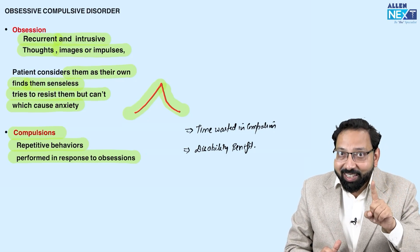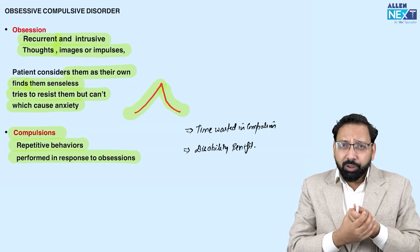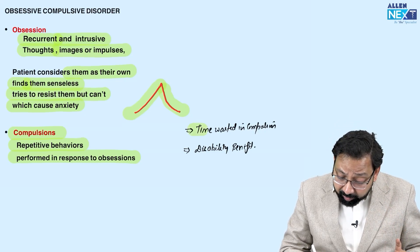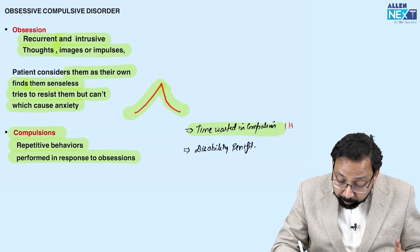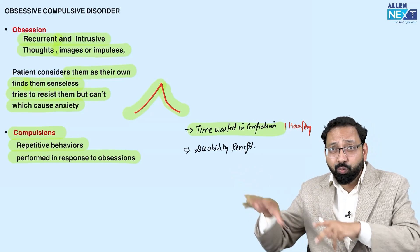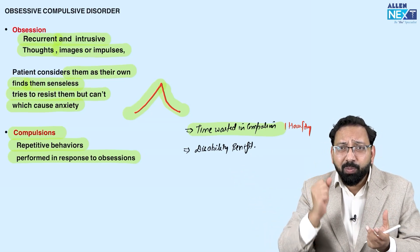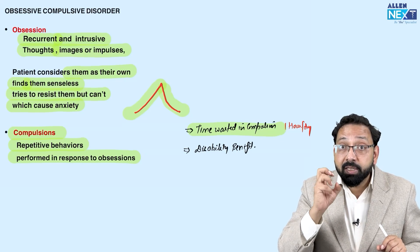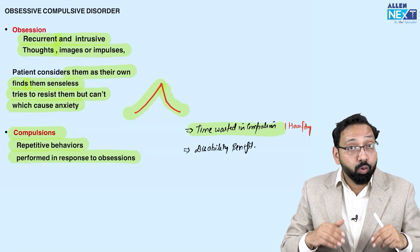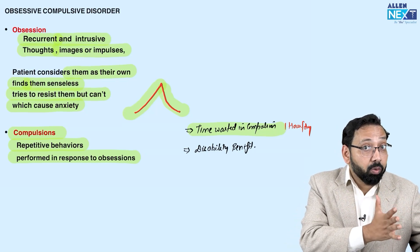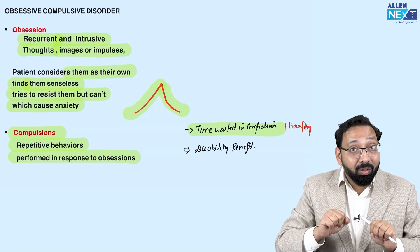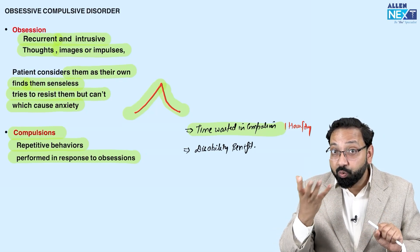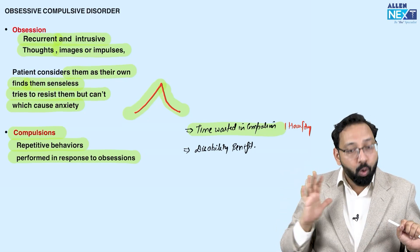A key criterion that has been asked in exams: time wasted in compulsions should be at least one hour per day. If someone is repeatedly washing hands, they cannot perform daily activities. That is why OCD patients are given disability benefit — unlike depression or anxiety, which are so-called neurotic disorders for which we don't give disability benefit. OCD patients wasting at least one hour a day receive disability benefit.